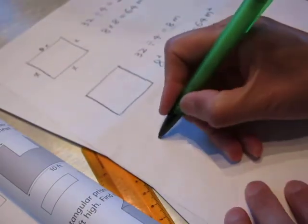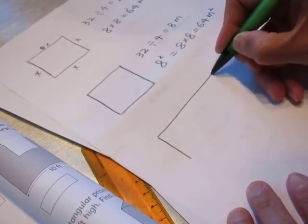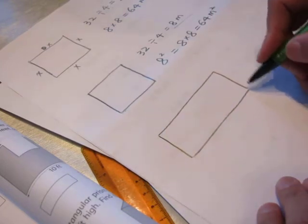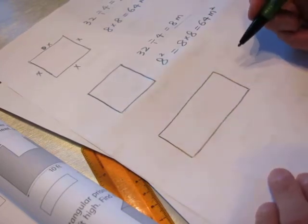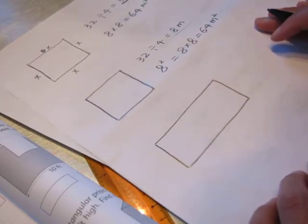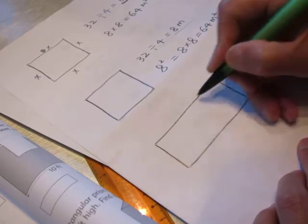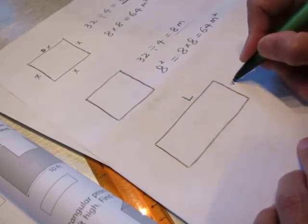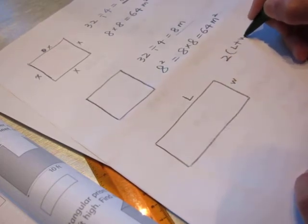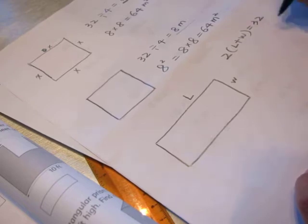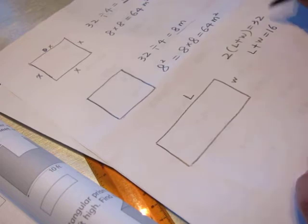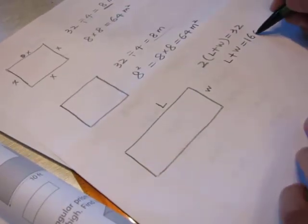Okay, so now we have a rectangle, and the perimeter is... this is length, this is width, so 2 times length plus width is 32. So length plus width is 16. Does it make sense? Centimeter.